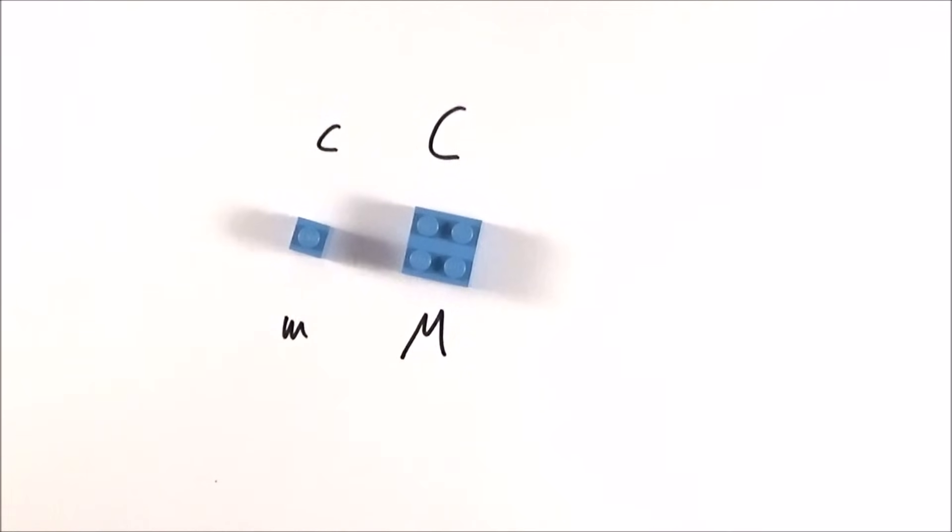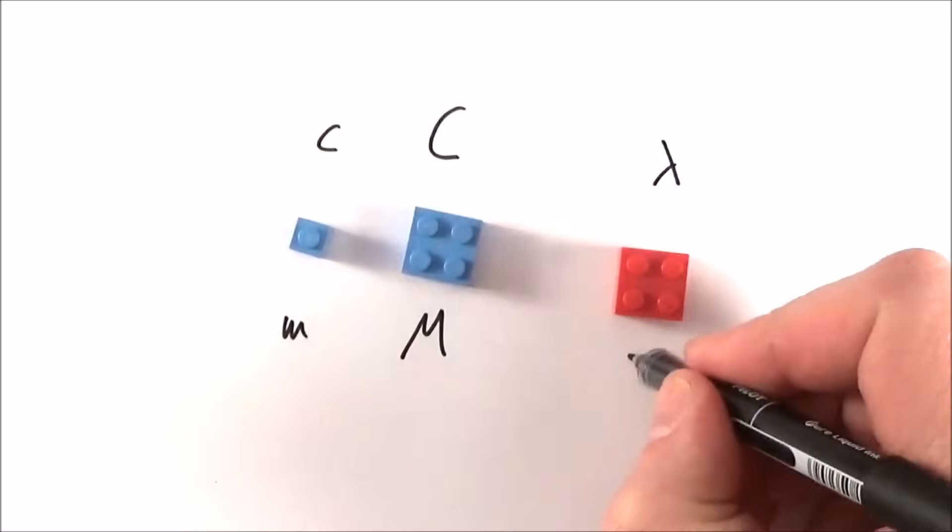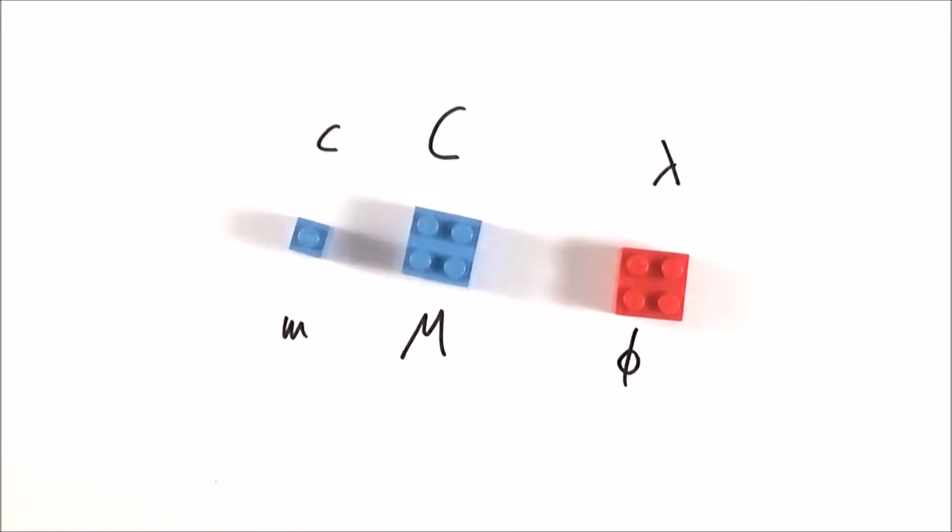But you soon realize we've only got 52 possible combinations, and there are hundreds of things that we need. So we use letters from other alphabets, perhaps lambda or phi. However, this still doesn't quite solve our problem.